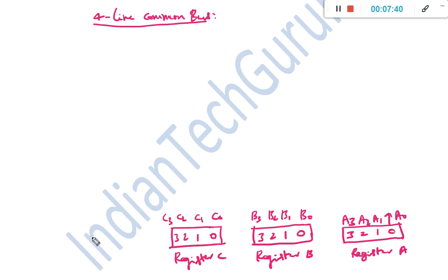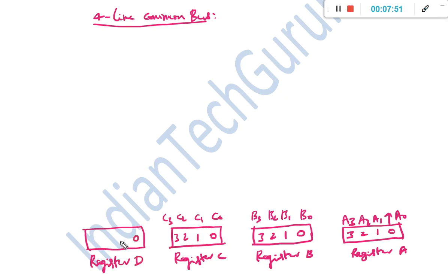And finally, register D contains bits D0, D1, D2, and D3.